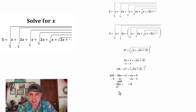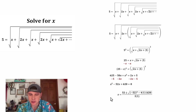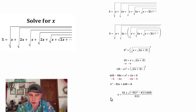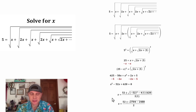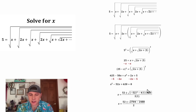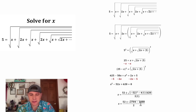625 minus 5 is 620. Negative 50x minus 2x is negative 52x, and we bring down the x squared, leaving us with zero. Let's rearrange in descending order and solve with the quadratic formula. x equals negative negative 52 — which is 52 — plus or minus the square root of (negative 52 squared minus 4 times 1 times 620), all divided by 2. We simplify: negative 52 squared is 2704, and 4 times 1 times 620 is 2480. So we get 2704 minus 2480, which is 224, all divided by 2.